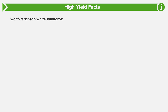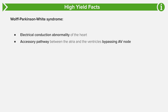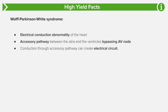Now let's discuss some high-yield facts. Wolff-Parkinson-White syndrome is a condition in which the heart uses an accessory pathway between the atria and the ventricles that bypasses the AV node. Normally, electricity goes from the atria to the ventricles through the AV node, but in WPW the accessory pathway goes around the AV node and conducts quicker, hence the shortened PR interval. By bypassing the AV node — where the impulse normally waits before being propagated further — conduction travels at a significantly higher rate than normal. When this conduction creates an electrical circuit or loop, the result is supraventricular tachycardia and accessory symptoms.